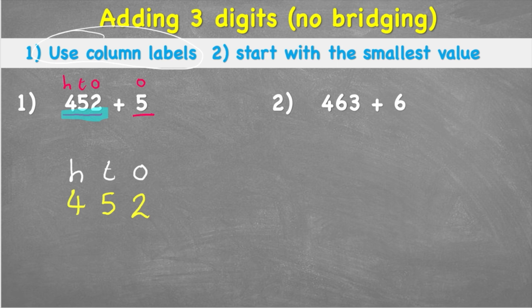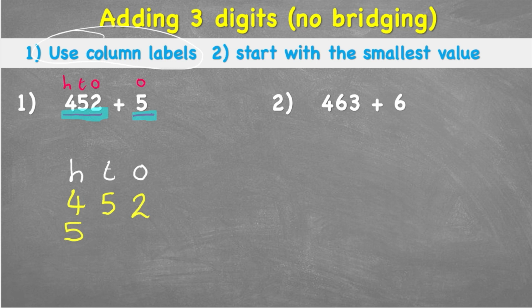Now I look at the 5 I'm adding — that's in the ones column, so I'm going to put it underneath the 2. This is where a lot of people make a mistake. Because we're so used to reading left to right, some people put the 5 all the way over in the hundreds column, which would make it 500. That's not right — it's only a 5, so it goes back in the ones column.